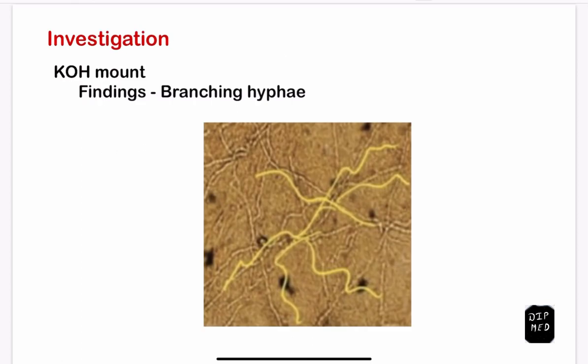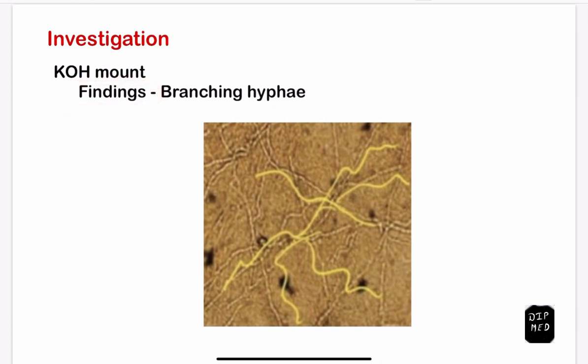The investigation of choice for dermatophytosis is a KOH mount. Potassium hydroxide dissolves the keratin from the specimen, allowing better visualization of the fungal filaments. The finding of dermatophytosis on KOH mount is branching hyphae, as shown in this picture.